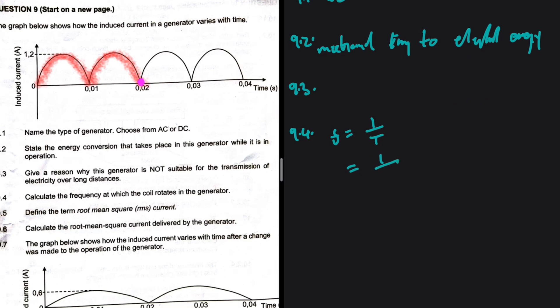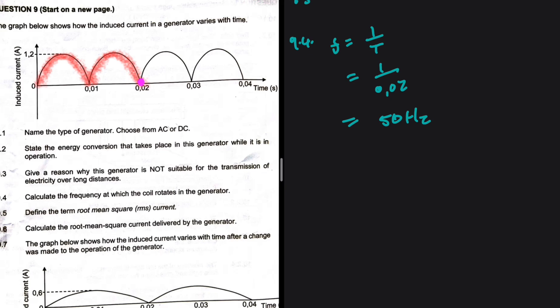So the frequency is going to be 1 divided by 0.02. So 1 divided by 0.02, this is 50 hertz. There we go. That is the period... oh, that is the frequency, not the period. 50 hertz.